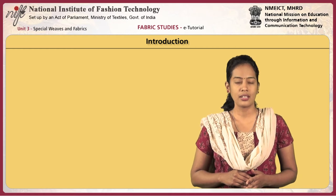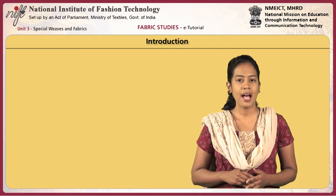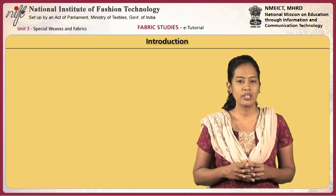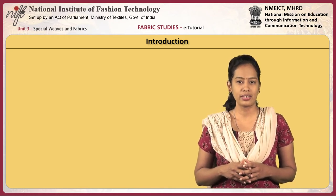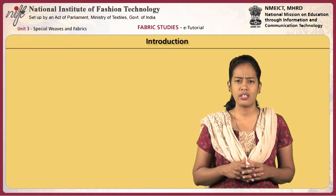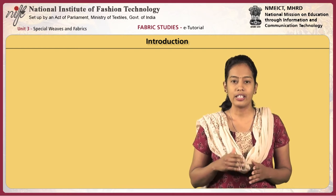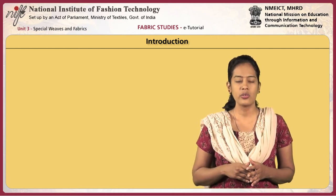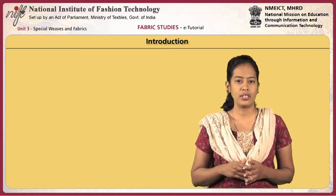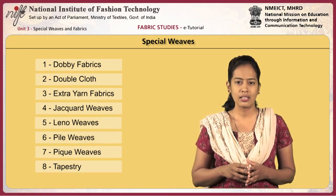Certain fabrics are produced with special features such as patent woven designs, surface textures, and open work. Usually, these specialized woven fabrics are made using an additional mechanism attached in the conventional weaving loom. They are also produced in varying widths including narrow fabrics, which are used for various purposes such as trims for a garment.